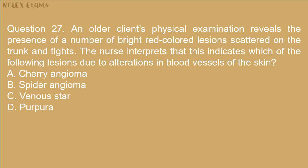Question 27. An older client's physical examination reveals the presence of a number of bright red-colored lesions scattered on the trunk and thighs. The nurse interprets that this indicates which of the following lesions due to alterations in blood vessels of the skin? A. Cherry angioma. B. Spider angioma. C. Venous star. D. Purpura.